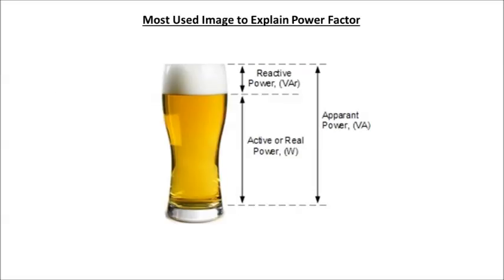This image is probably the most used analogy to explain power factor. Electrical power has basically three components. The first one is apparent power, which is in VA. Active power, which is in watts, also called true or real power. And the third component is reactive power, which is in VAR. In the image, the full volume of the mug represents apparent power, the volume of the beer represents active power, and the volume represented by the foam is the reactive power.